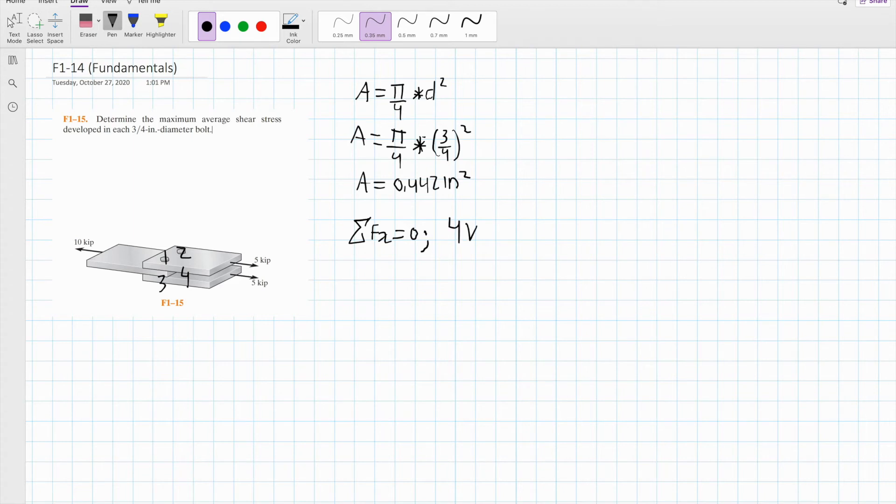For V, we're going to sum the shear forces minus 10 and equate this to 0. Now we solve for V. V is equal to 2.5 kip.